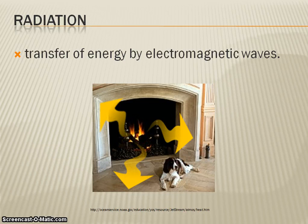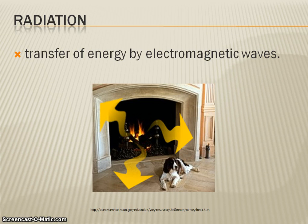Radiation is the transfer of energy by electromagnetic waves. Heat can move out of a substance through radiation. When you feel heat from something like a fireplace or a stove, that is often radiation — though sometimes it's convection. This is also how we get heat energy from the sun.